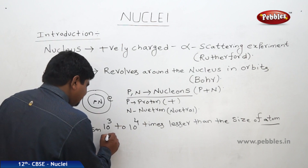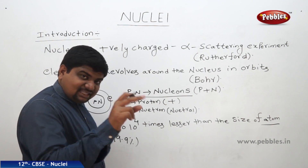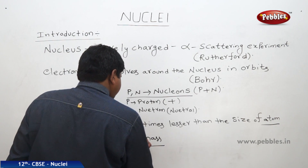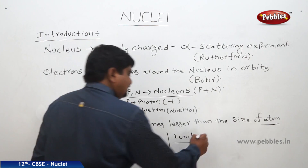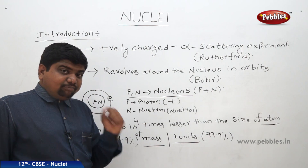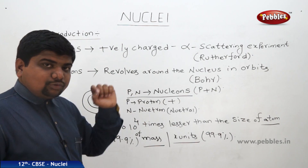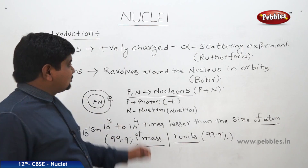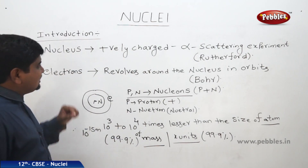Despite being so small, 99.9% or more of the entire mass of the atom is concentrated inside the nucleus. That means if the atom's mass is some X units, 99.9% of X is concentrated inside the nucleus. Rutherford assumed that most of the mass and charge of an atom are concentrated at one common point, and that point is called the nucleus. This point is similar to the center of mass of moving systems. That is the basic introduction about the nucleus.